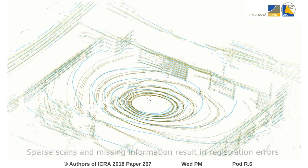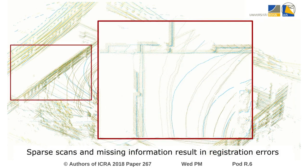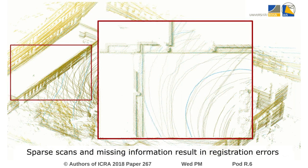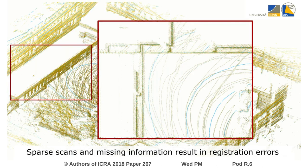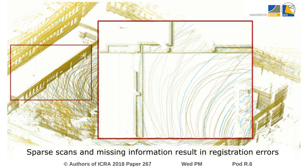Inaccuracies — for example caused by wrong data associations, missing information, or the sparseness and distribution of measurements — lead to misalignments and degeneration in the map and require costly reprocessing of the sensor data.